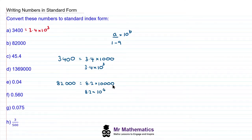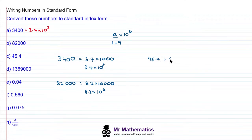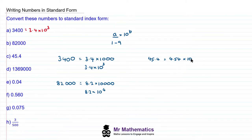If you're not sure about this, we can just count the number of zeros again. So for question C, if we have 45.4, we write this as 4.54, and we're going to multiply this by 10. To write it in standard form, we need a power of 10, so this would be 4.54 times 10 to the power of 1.